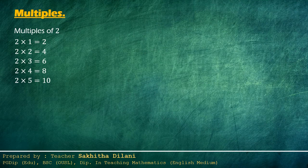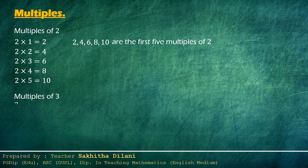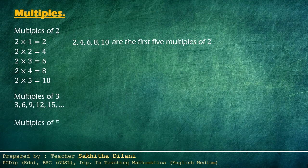So the first five multiples of two are two, four, six, eight and ten. We can write more multiples of two. The first five multiples of three are three, six, nine, twelve and fifteen. The first four multiples of five are five, ten, fifteen and twenty. You can write more multiples.